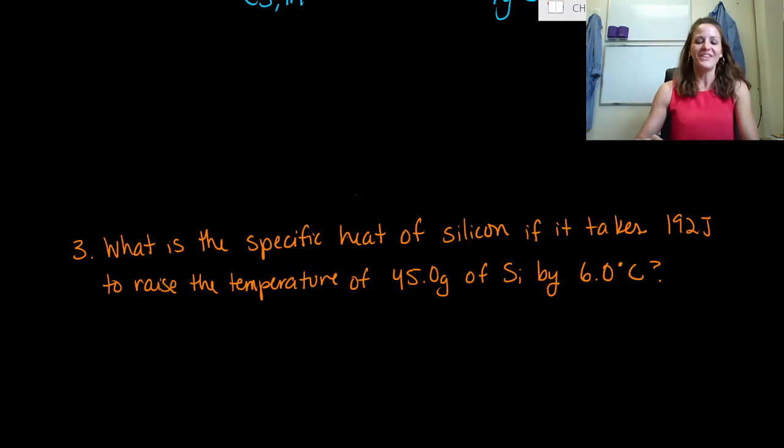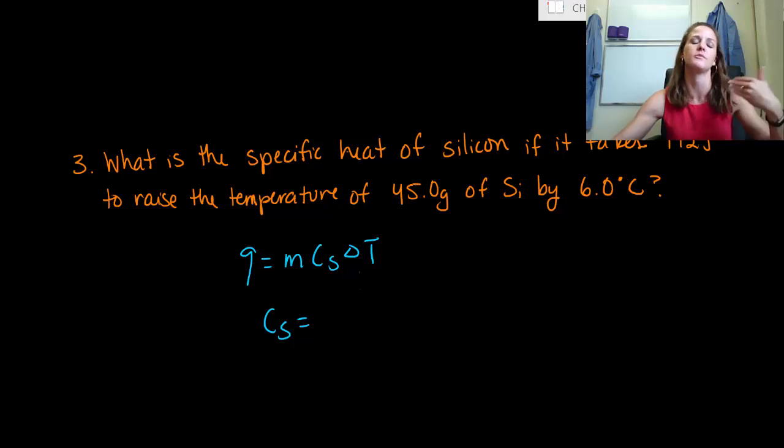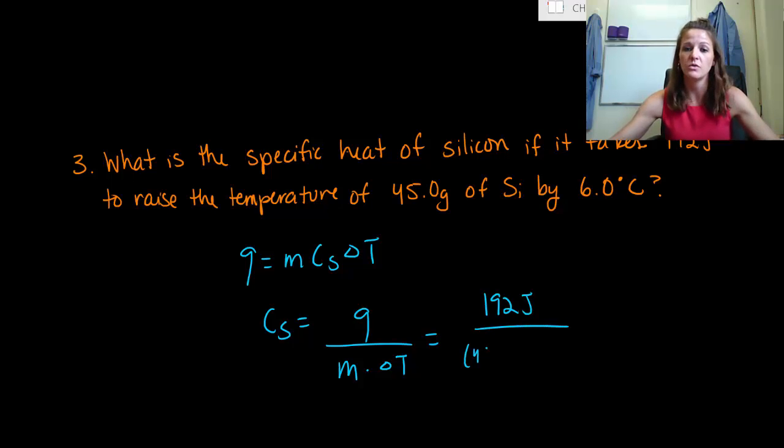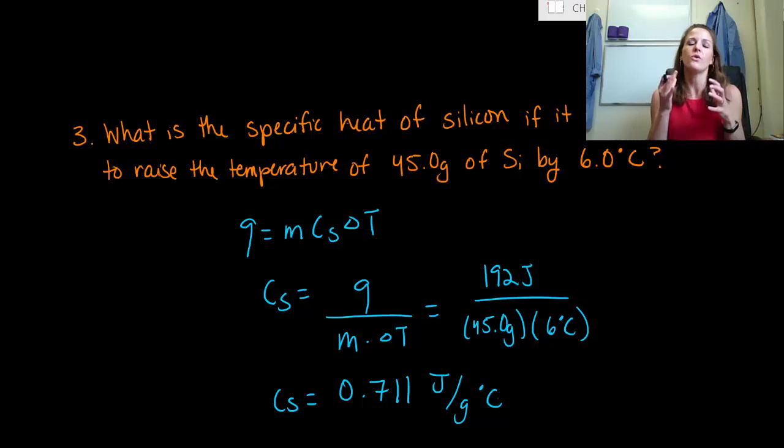Alright. Did you get an answer? Hopefully you did. And the first thing that I hope that you were able to do was come up with an equation. So remember that you have Q is equal to M times C sub S delta T. And so really all you have to do is rearrange this so that you can get it equal to C sub S or your specific heat. So basically what you can see is that it's a heat component divided by a mass component divided by a temperature component. So really all you had to do is pluck those pieces of information out of this problem. So your heat, we're saying that it takes 192 joules of energy. Your mass of silicon was 45.0 grams. And then the change in temperature was six degrees Celsius. So if you plug that all in, you're able to determine your specific heat has a value of 0.711 joules per gram degree Celsius for silicon.